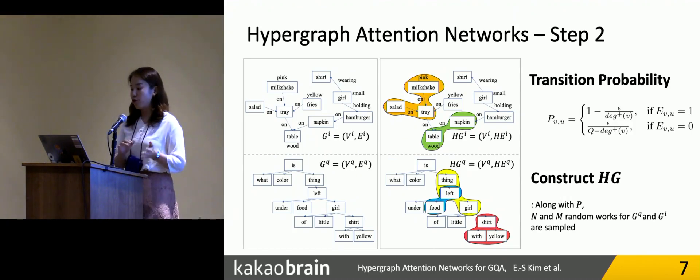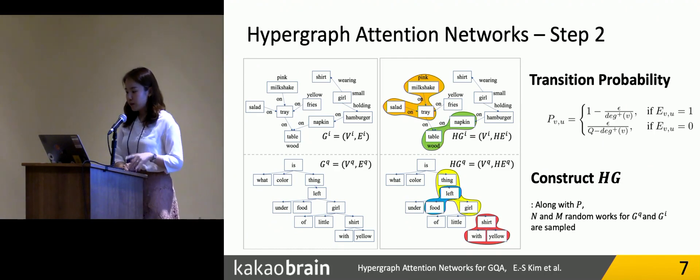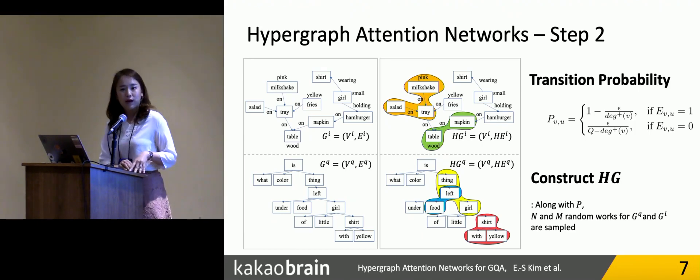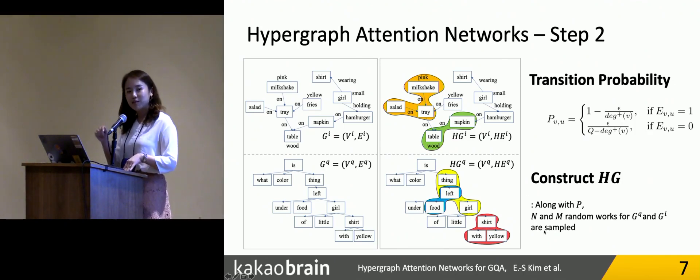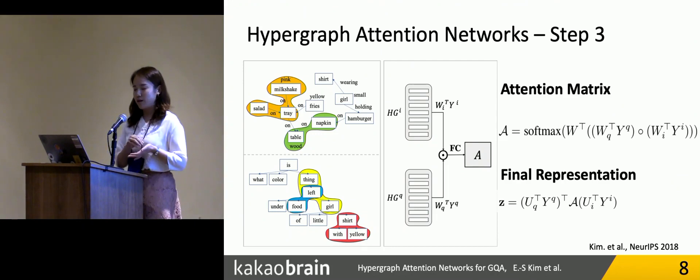After constructing the two symbolic graphs, we define two transition probability matrices according to the number of outgoing edges of each graph. We define the transition probability p like this. Using the transition probability p and hyperparameter k, which defines the step size of random walk paths, we sampled n number of random walk paths from the image graphs, and m number of random walk paths from the question graphs. Each random walk path is considered as a subgraph structure.